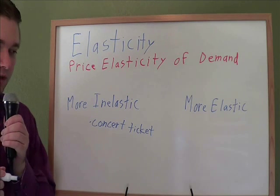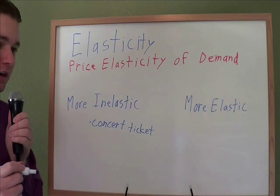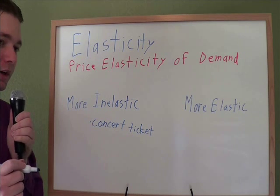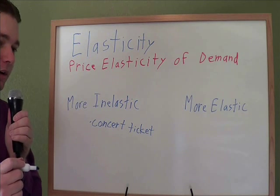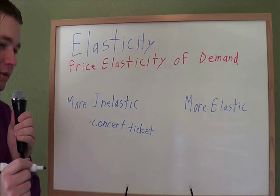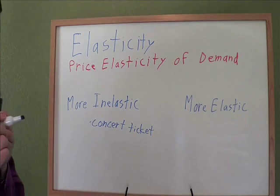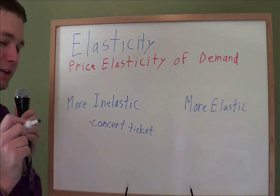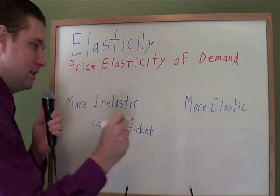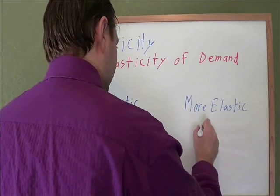On the other hand, what about after the concert you go to McDonald's and it turns out the Big Mac costs more than you thought it would? Well, the Big Mac you don't care about as much, so you might just get the chicken instead. You might care more about that — even if the price just goes up a little bit, you might just stop buying it and buy something else entirely. That makes it more elastic.